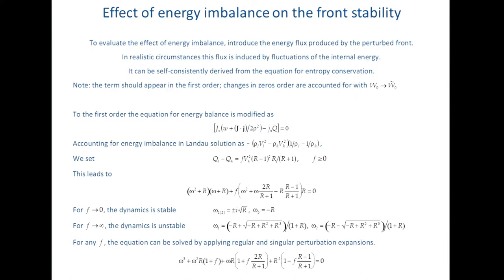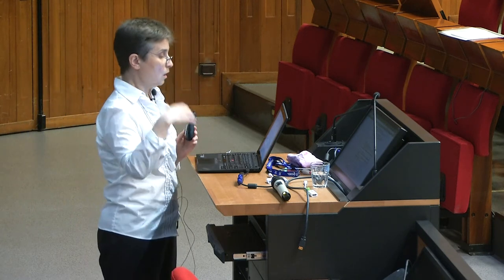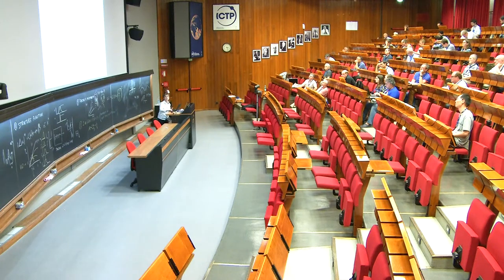If we would like to model the effect of energy imbalance produced by the perturbed front within the framework of ideal incompressible fluids, we just need to introduce an additional source term which produces energy. We then derive our governing equation for the eigenvalues, which can be considered in two different limiting cases. When F is small, the balance dynamics term dominates — this corresponds to stable oscillations. When F is large, approaching infinity, the Landau-Darrieus instability term dominates. These limiting cases include large density contrast, large energy perturbations, small density contrast, small energy perturbations, et cetera.